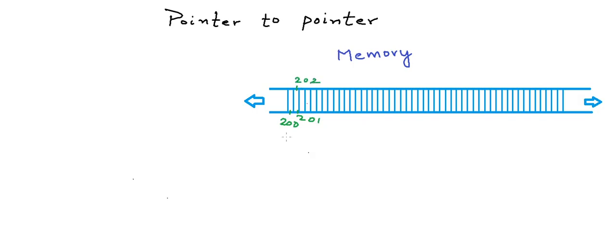Now let us say in my program I have declared an integer variable named x and maybe I have initialized it as 5. When the program runs, some amount of memory will be allocated for this variable x. In a typical architecture, in a typical compiler, an integer is stored in 4 bytes. So 4 bytes will be allocated for x — let us say these 4 bytes starting at address 225. And the value stored in this block of 4 bytes for x is 5.